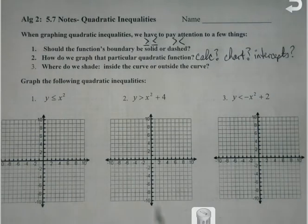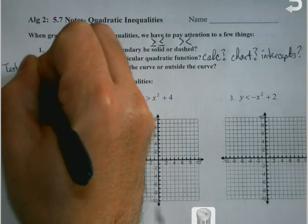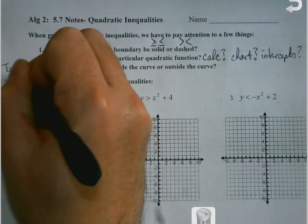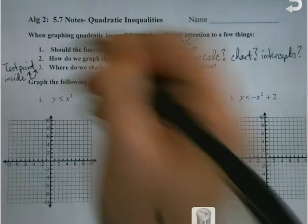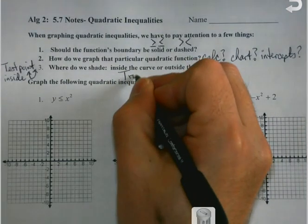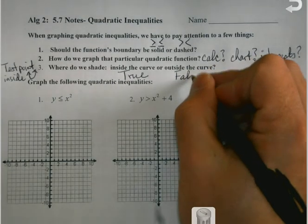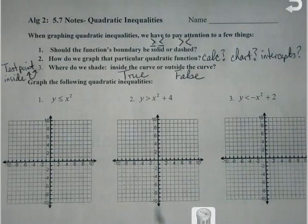Our final thing we're going to be watching for is: where do we shade? We're going to be shading because we're dealing with inequalities. So am I going to be shading inside or outside the curve? We're going to do a test point inside the parabola. If the statement we get is true — like if it said 4 is greater than 0 — we'll shade inside the curve. If it's false, we shade outside the curve.